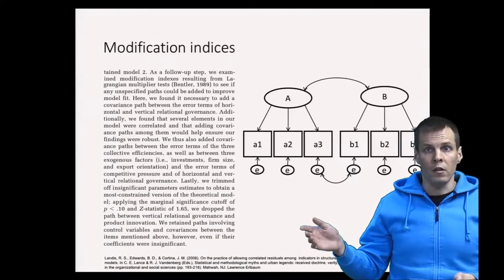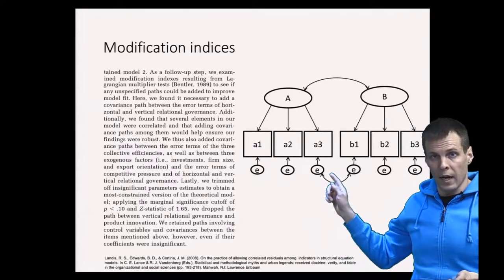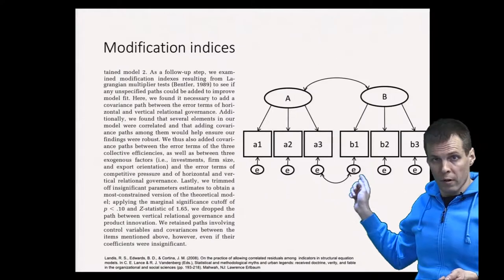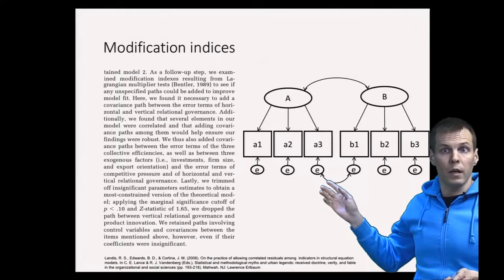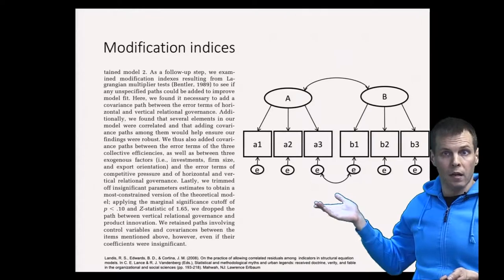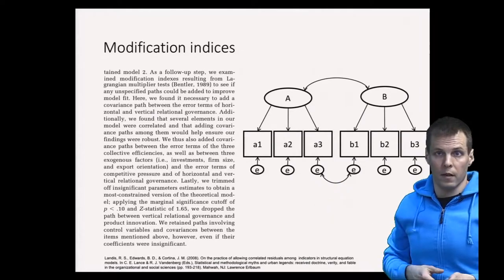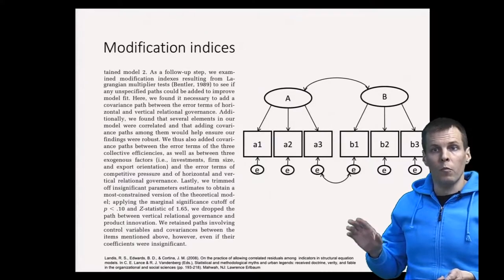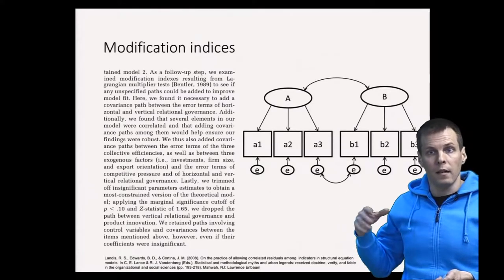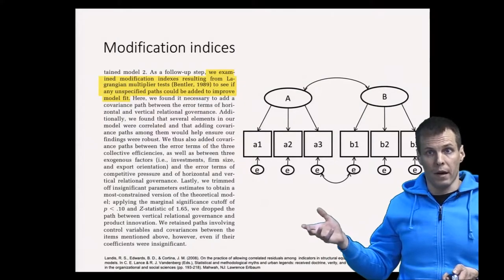I said earlier that your software could indicate that if you add a correlation between two error terms, that will improve the fit of the model. It will make the chi-square smaller and, we hope, non-significant. The idea of modification indices is that the computer calculates things that you could add to your model to make it better.